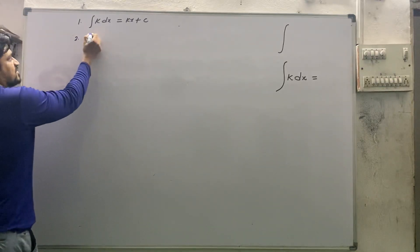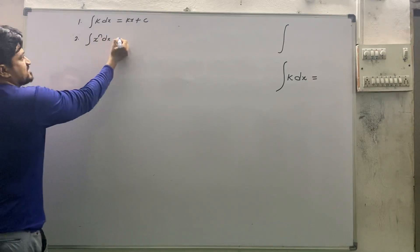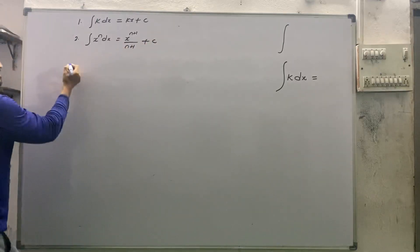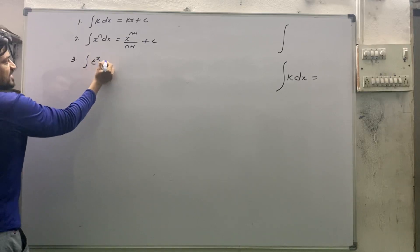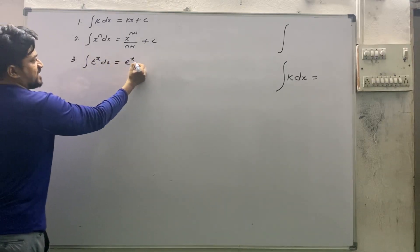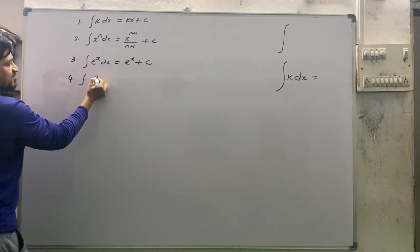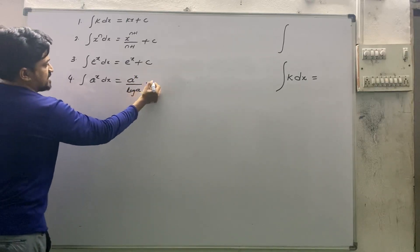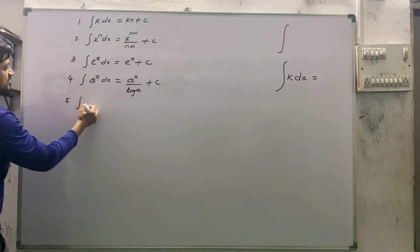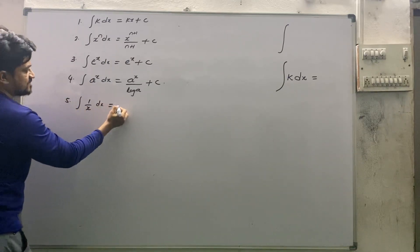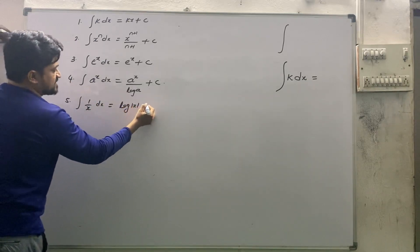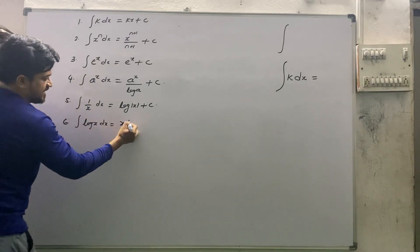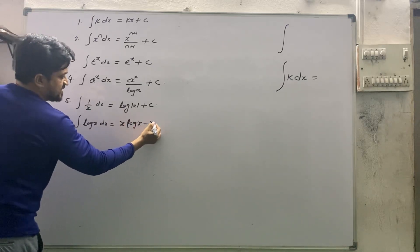Second formula: integral of x^n dx = x^(n+1) / (n+1) + c. Third: integral of e^x dx = e^x + c. Fourth: integral of a^x dx = a^x / log a + c. Fifth: integral of 1/x dx = log|x| + c. Sixth: integral of log x dx = x·log x − x + c.